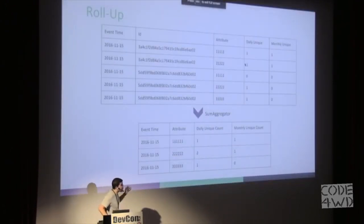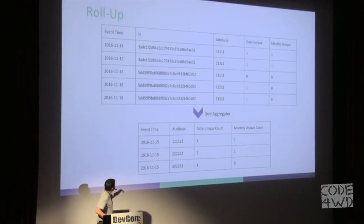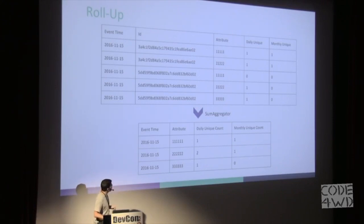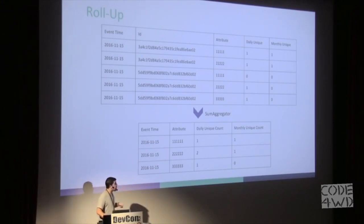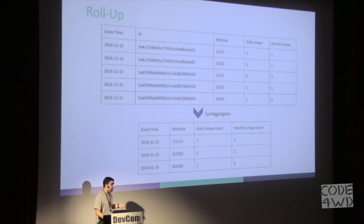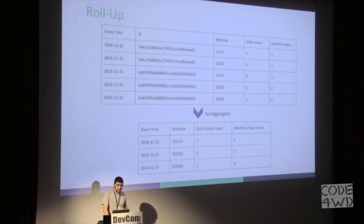A few more things I want to say here: for indexing data in Druid, you must specify a timestamp because all queries in Druid are centered around time data, so you must specify some interval for the query. The attribute column used for filtering is called a dimension, and the daily unique and monthly unique columns used in aggregation are called metrics. Here we used one aggregator, but Druid supports min, max, and count aggregators, plus many more provided by third-party extensions.